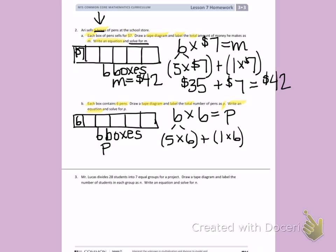5 times 6: I'm going to count by 5s six times: 5, 10, 15, 20, 25, 30. 5 times 6 is 30. Then I'm going to add the total for 1 times 6, which is 6. 30 plus 6 is 36. So I can come back to my tape diagram and write P equals 36.